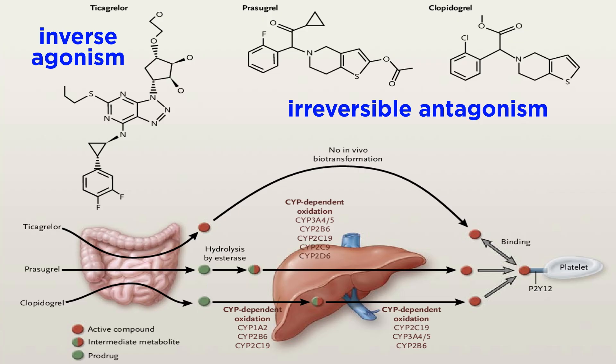This inverse agonism confers a greater platelet inhibitory effect than prasugrel and clopidogrel, due not only to blocking endogenous ADP binding and subsequent receptor activation, but also reducing the spontaneous, agonist-independent activity of the receptor.